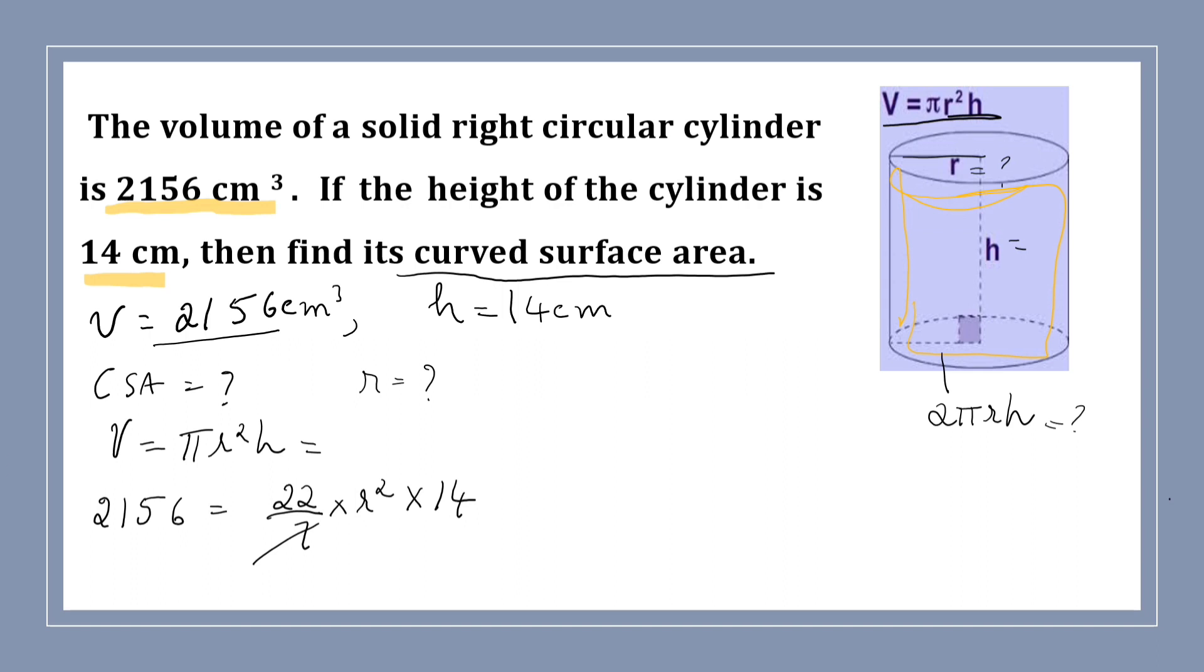So, 7 and 14 cancel. It implies that r² is equal to 2156 divided by this. 22 into 2. 2 into 22 goes to the denominator.